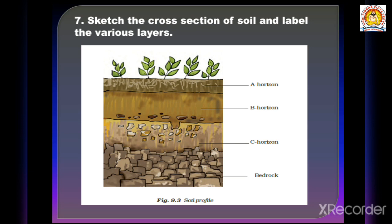You have to create a cross section of the soil and label the various layers. There are four layers: A horizon, B horizon, C horizon, and bedrock. Students, this diagram is very important — you have to practice it at home and also make it in your fair copy.